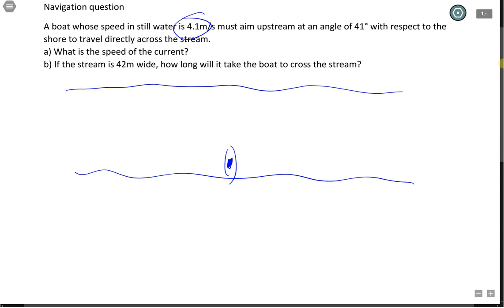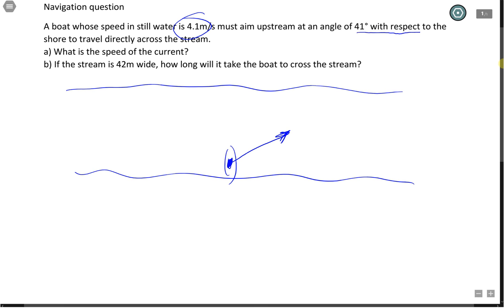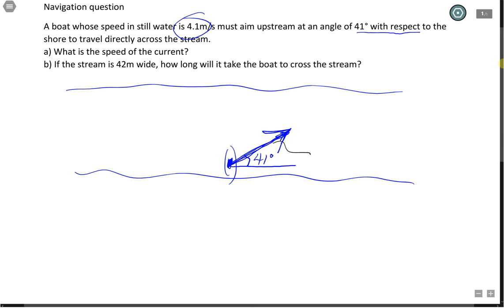This boat, however, is going to aim at an angle of 41 degrees with respect to the shore. What that means is 41 degrees is from here to here to the shore. This boat is going to aim this way. That means this vector is the vector of the boat. This is the speed of the boat in still water. This is how fast the boat can go. So this velocity over here is 4.1 meters per second.